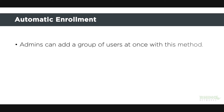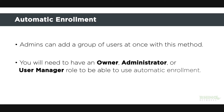First, we're going to start out with automatic enrollment. Using this method, admins can add a group of users and then send them all activation links that the user can then follow to complete their enrollment. You will need to have an owner, administrator, or user manager role to be able to use automatic enrollment.